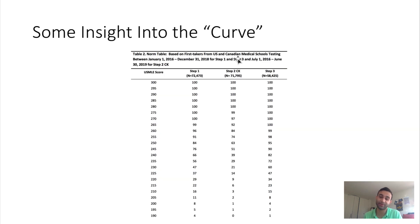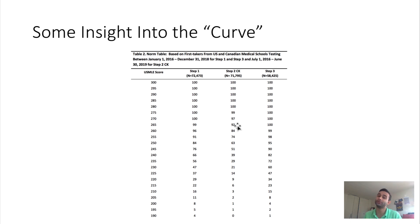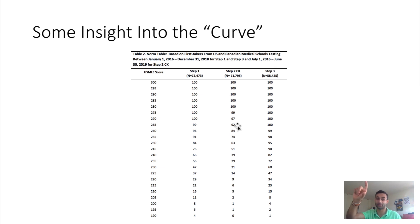People often assume the curve is easier for Step 2. For example, if you scored a 265 on Step 1 you'd be in the 99th percentile, but a 265 on Step 2 puts you in the 92nd percentile — so in that regard the curve is nicer. My percentiles lined up pretty much perfectly between Step 1 and Step 2, so even though the scores are slightly different, the percentiles still tend to line up quite well.